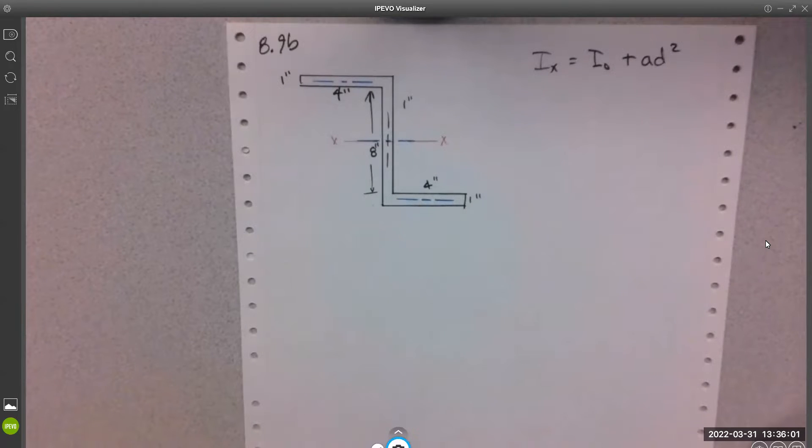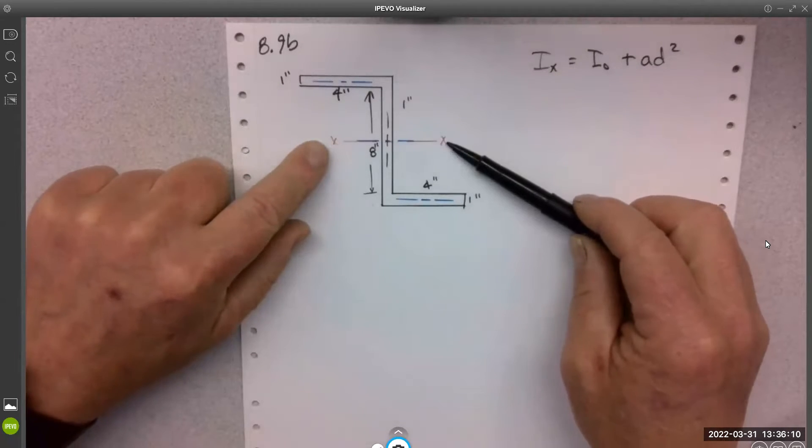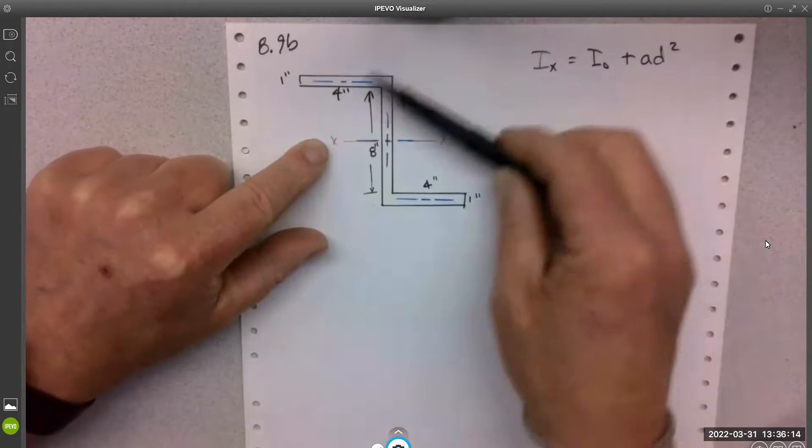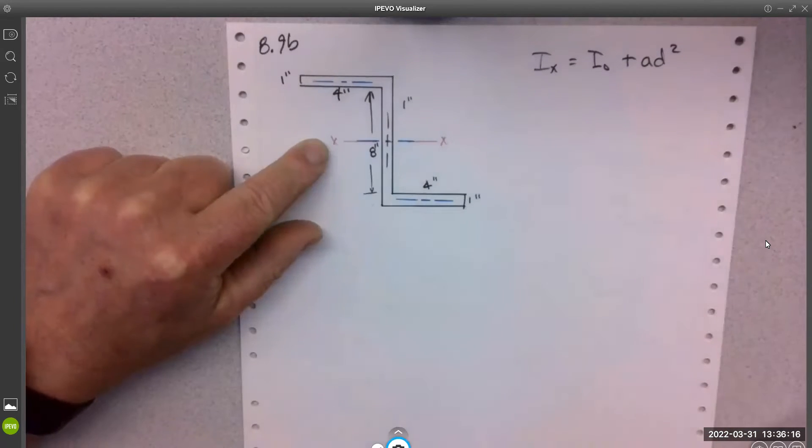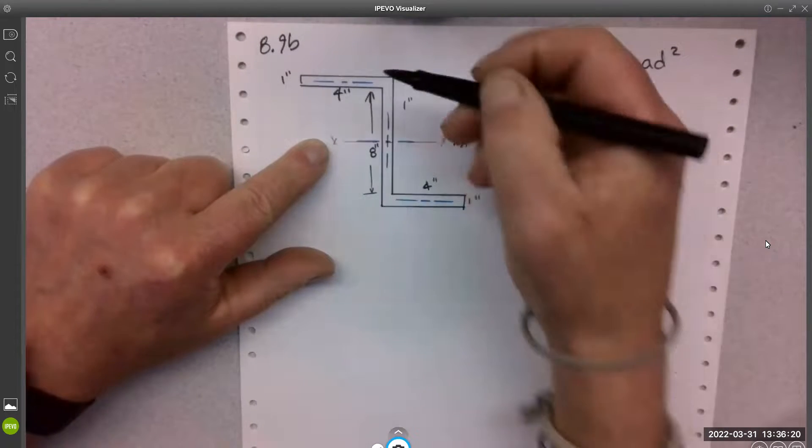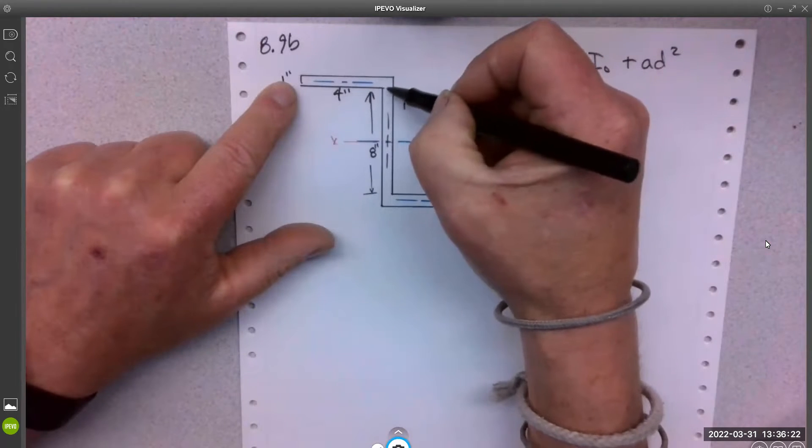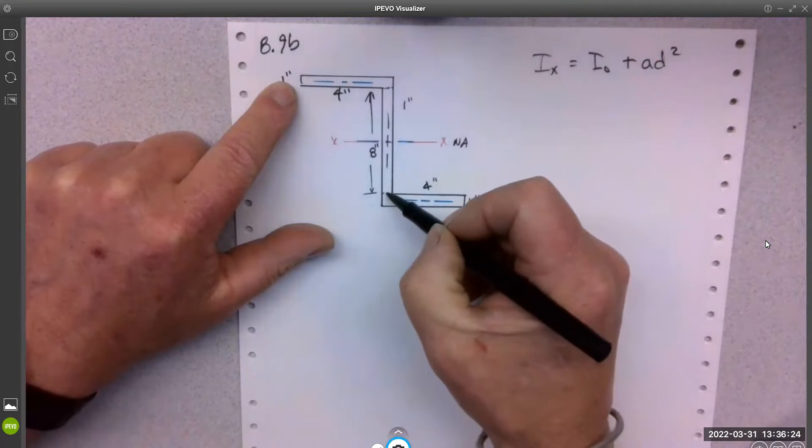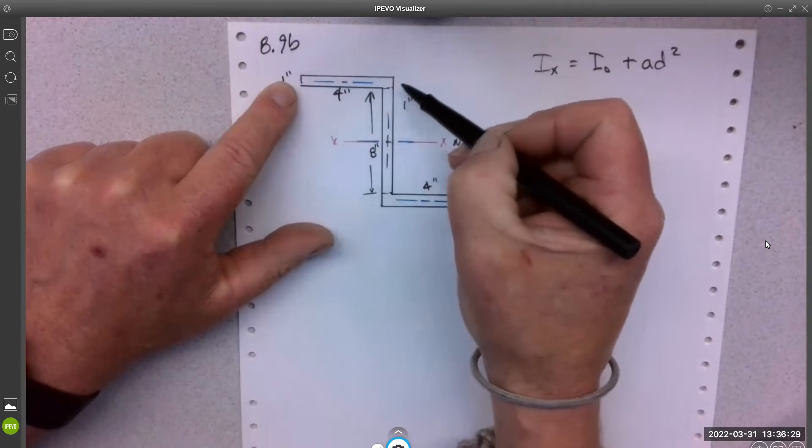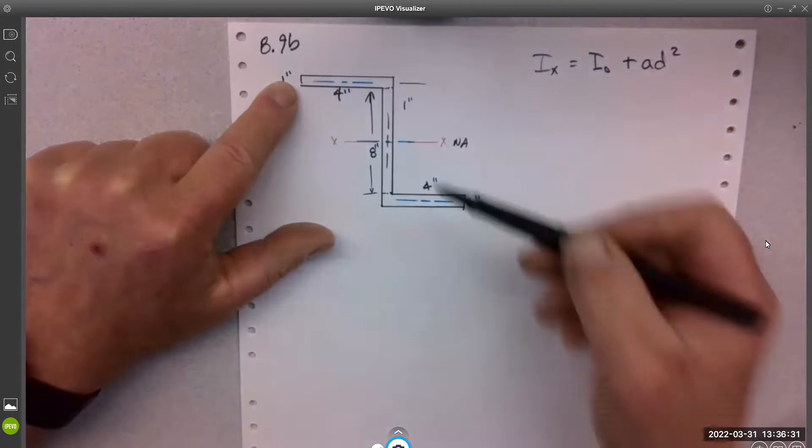On this one we can make the assumption, hey, this is symmetrical about that middle point in both directions. So that means we can go straight to the inertia. When I think about inertias, I'm going to think about individual shapes and their inertia and where that is compared to the centroidal axis. This is the neutral axis, centroidal axis of the entire thing. I'll call it neutral axis.